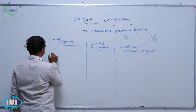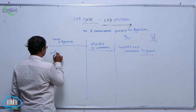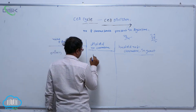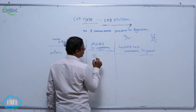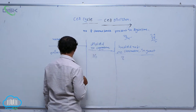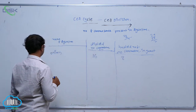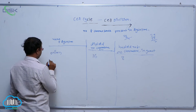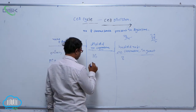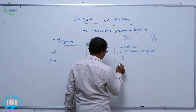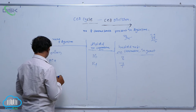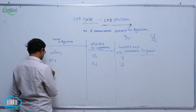After that, onion: the diploid number of chromosomes is 16, and the haploid number of chromosomes is 8. In onion, after that pea: the diploid number of chromosomes is 14, and the haploid number of chromosomes is 7.